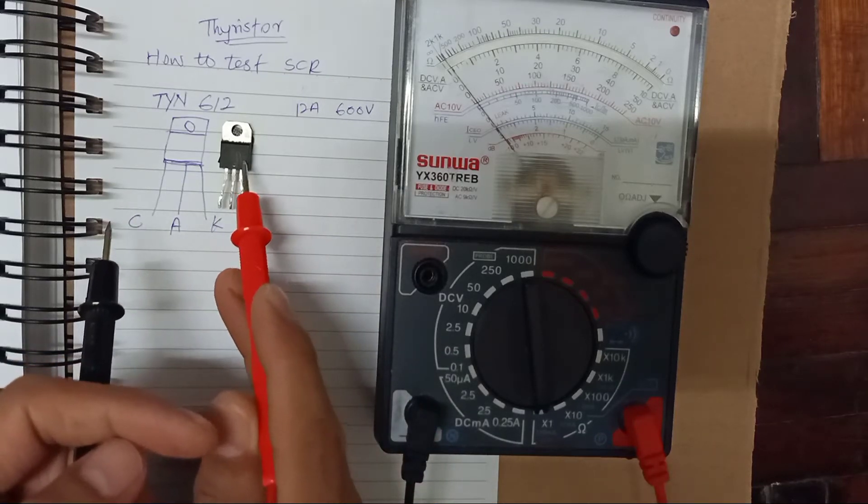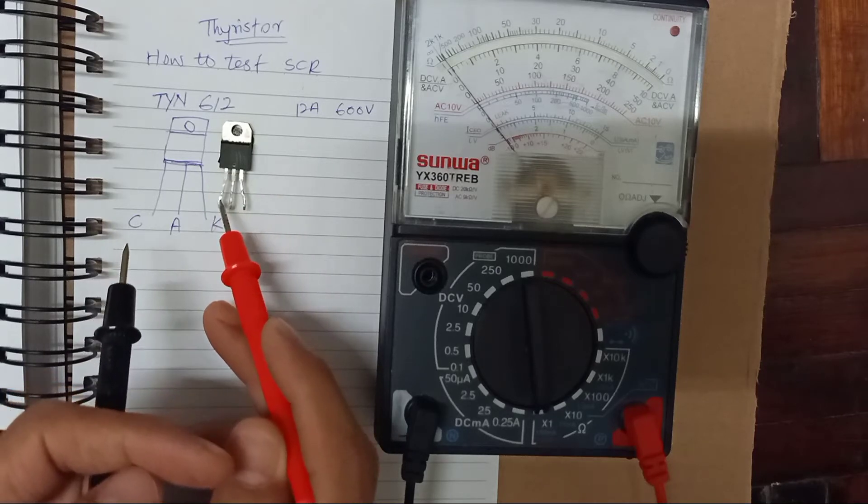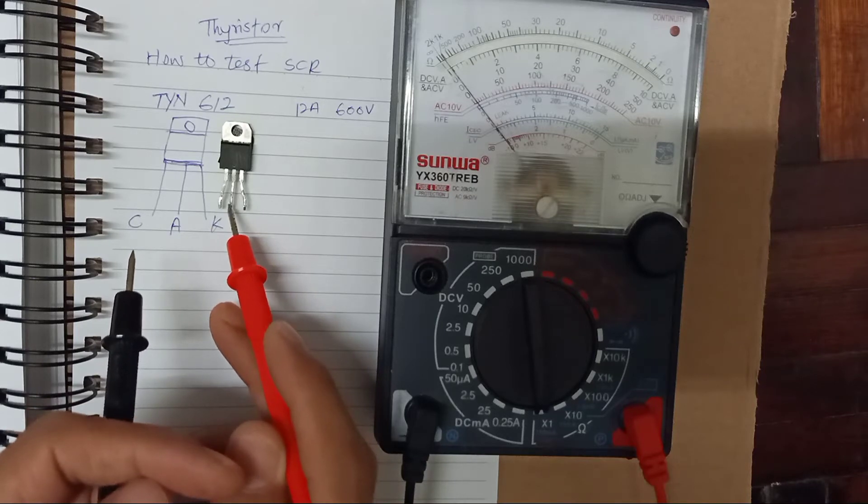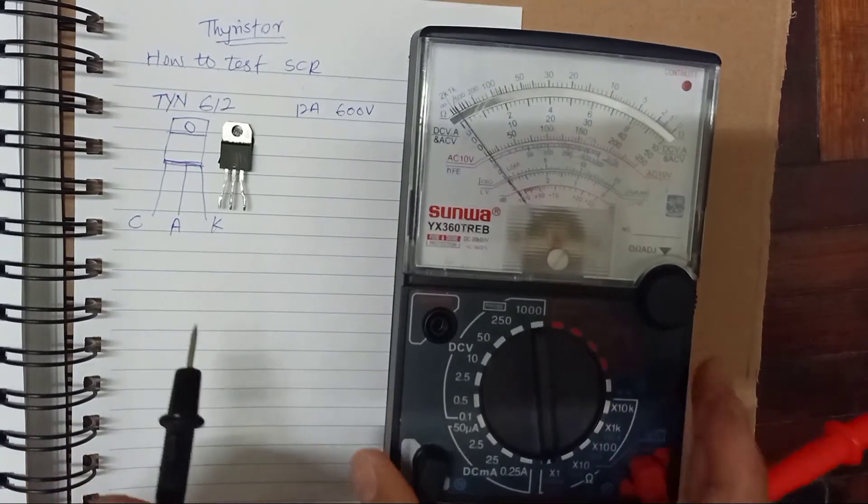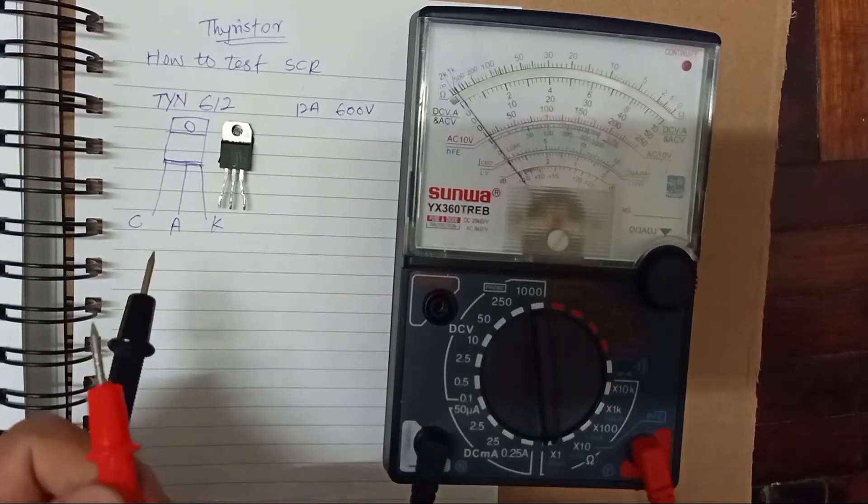Following the datasheet, I will get this one. The first pin is gate-out, then the intermediate is anode-out, and the last is the gate. So how to test? How do we know whether this works or not?